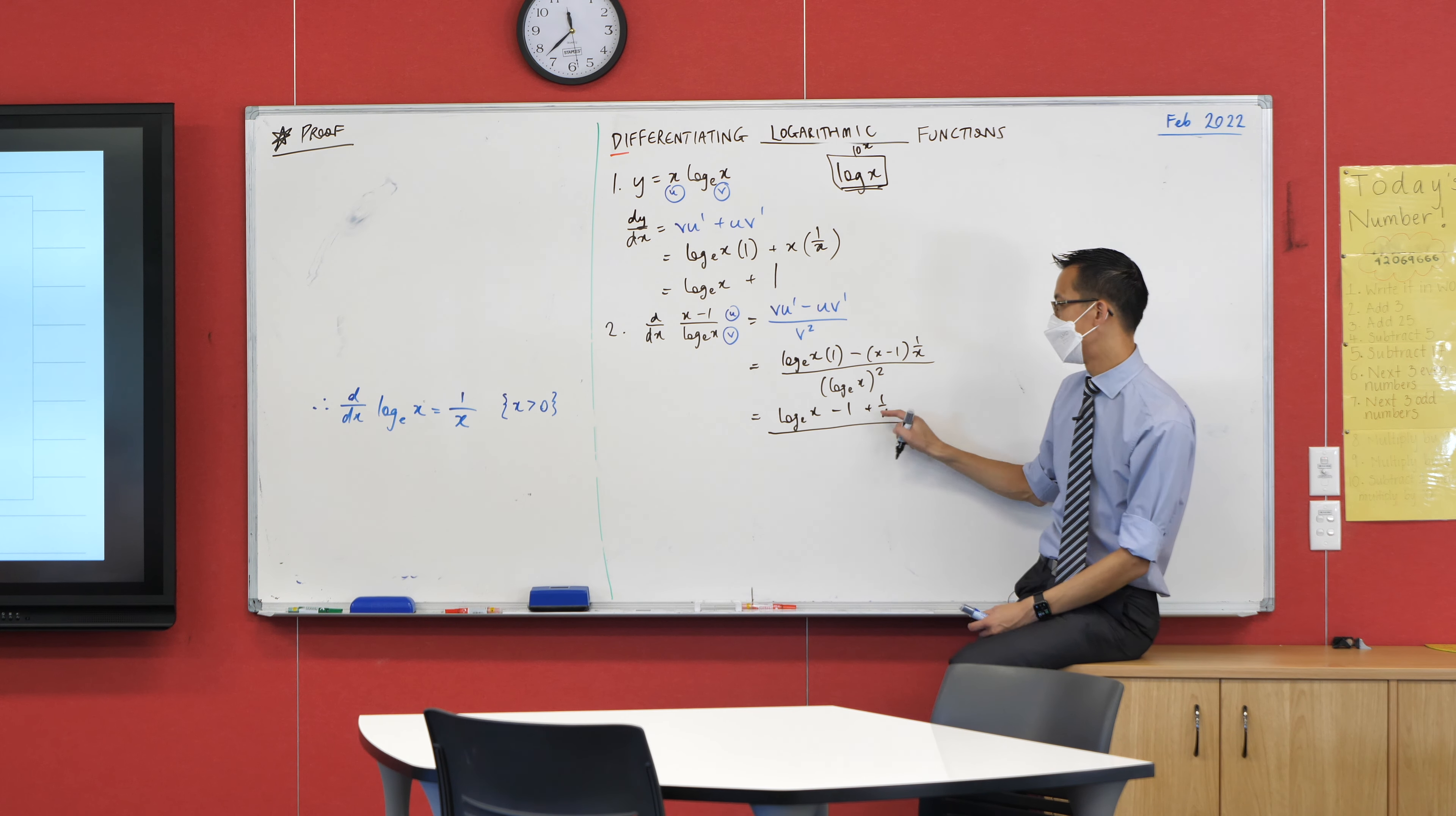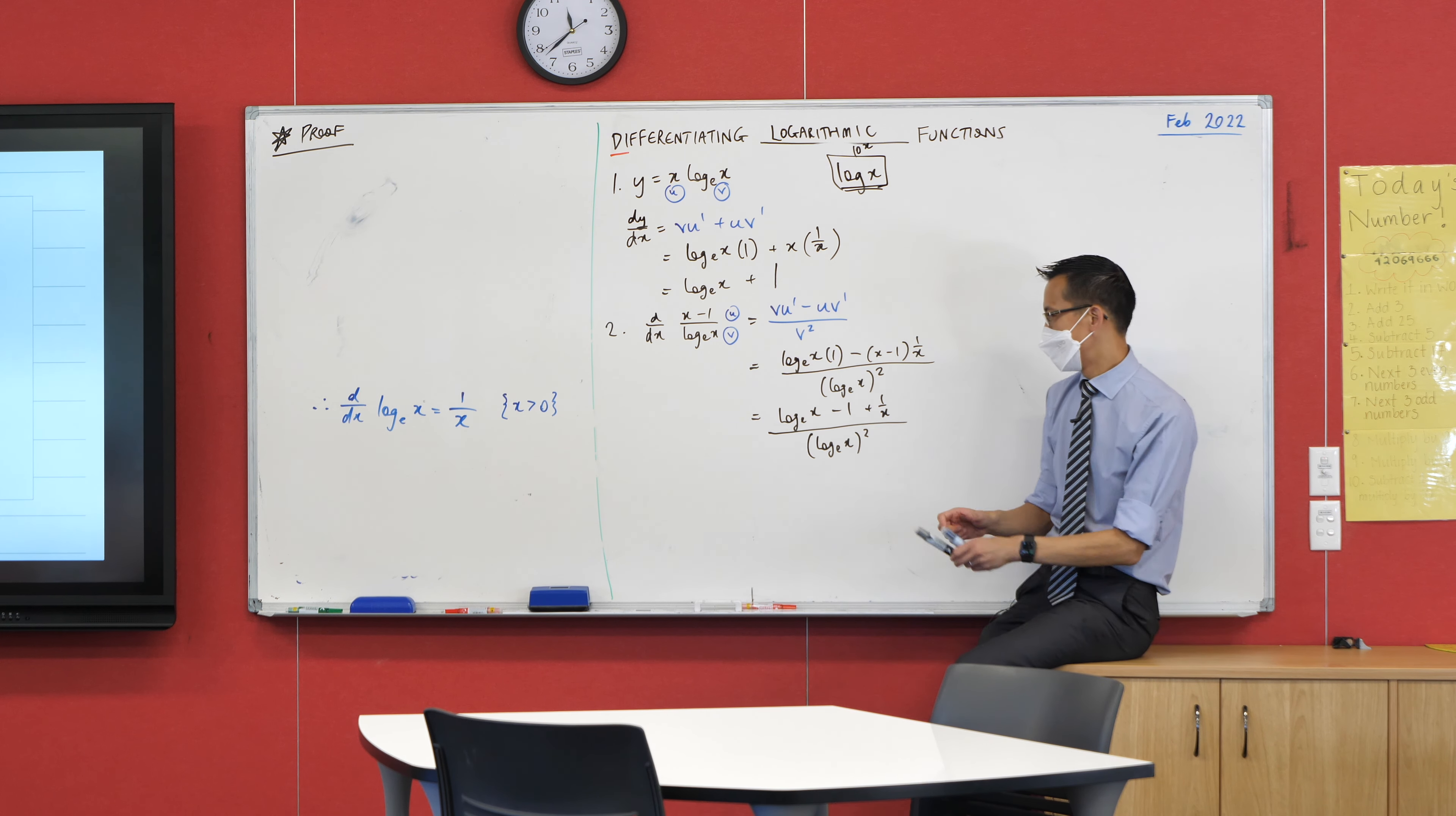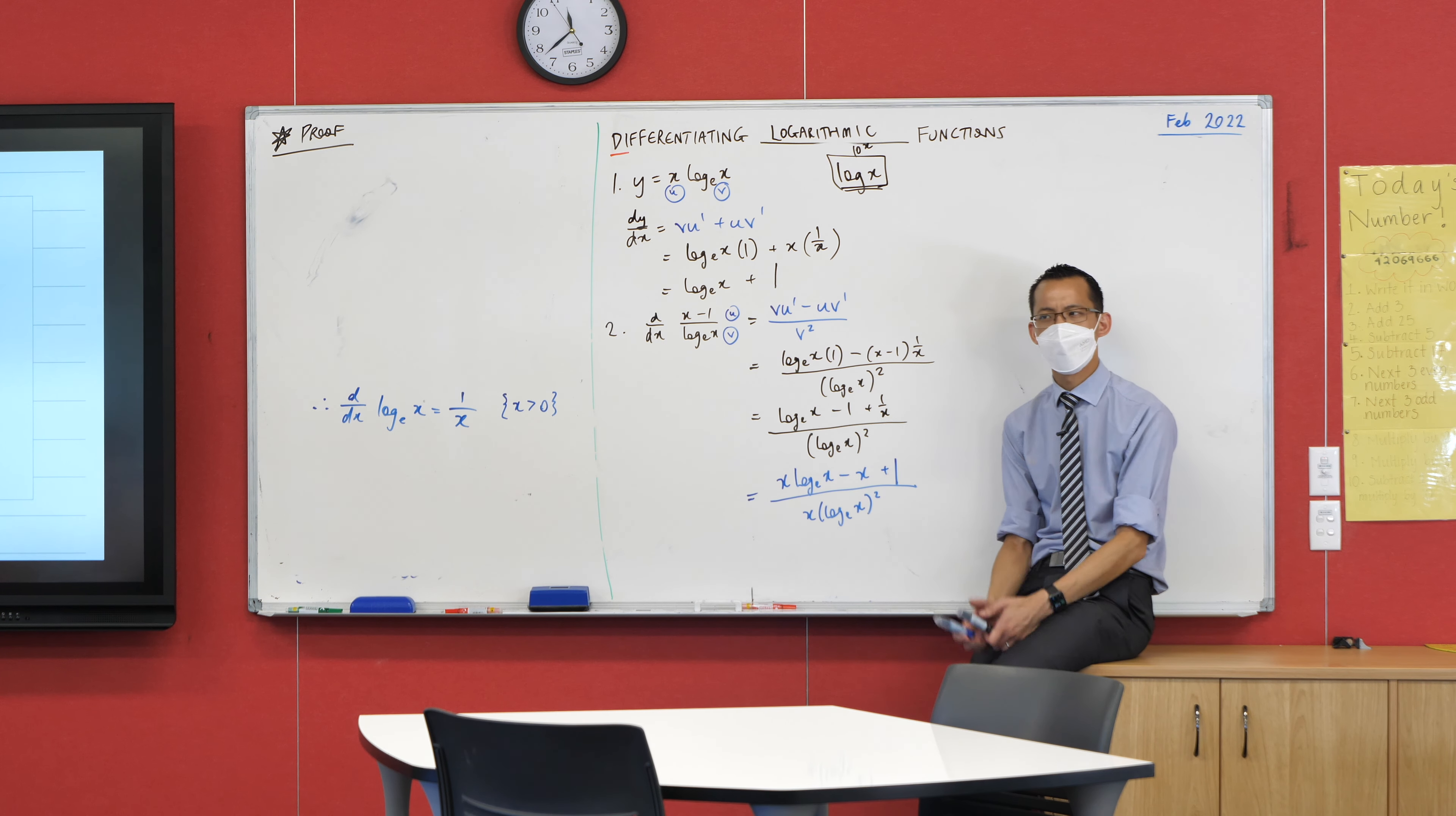If you really wanted to, you could actually multiply through the whole numerator by X, which would mean you would also multiply the denominator by X, and that would get rid of your fractions. So if you wanted, this would be fine. I'm going to go X log X minus X plus one, all over X log squared.